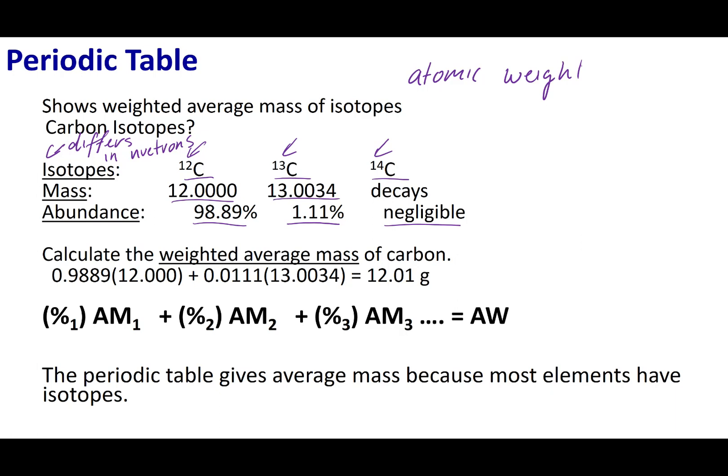What we can do to get the atomic weight is we have to take into account the abundance. I'm going to go ahead and follow this formula. I'm going to take the abundance of a particular isotope and times it by its atomic mass. I'm going to take the second isotope's abundance, and I'm going to go ahead and times it by its atomic mass. I'm going to do this for the most abundant isotopes found on planet Earth.